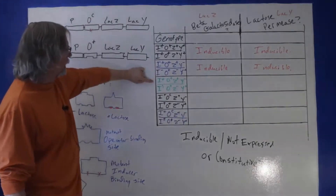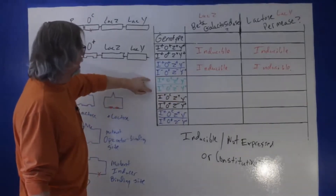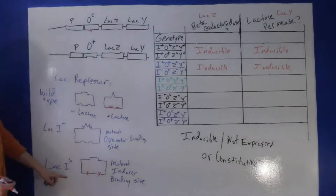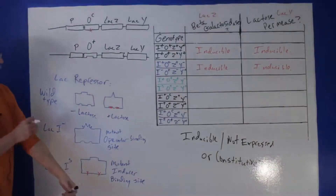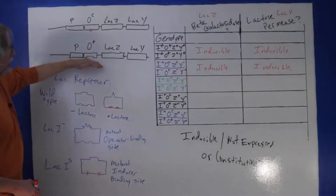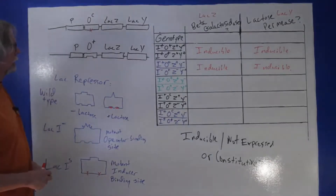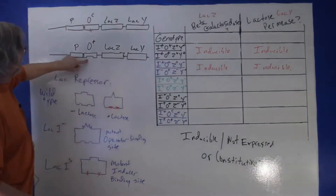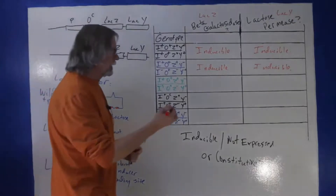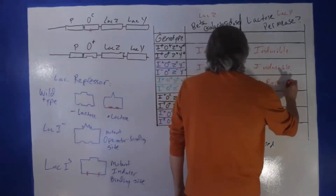In this example, lacZ-plus is on the plasmid and lacY-plus is on the chromosomal copy. Both have functional operators, but there is a super repressor. The super repressor can't bind lactose or allolactose, so it's constantly bound to the operator with no way to be removed. So for both lacZ and lacY, there is no expression.